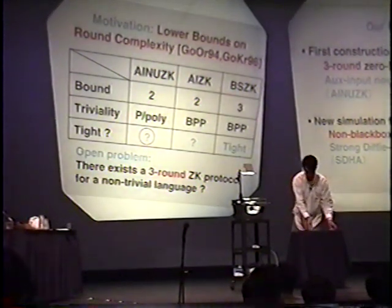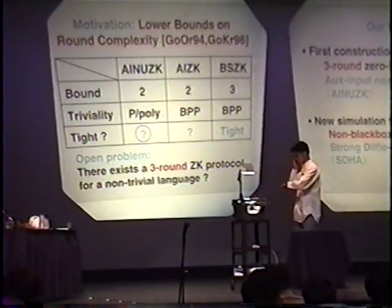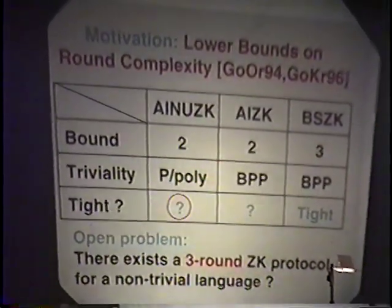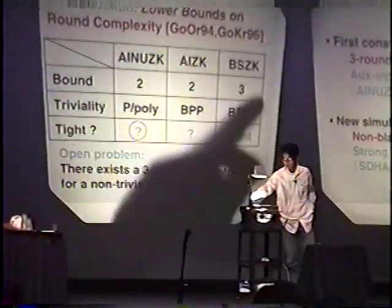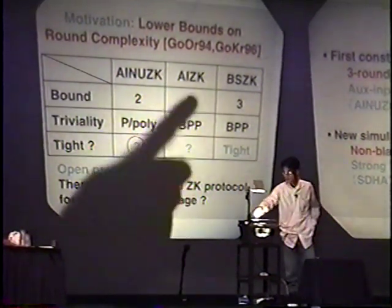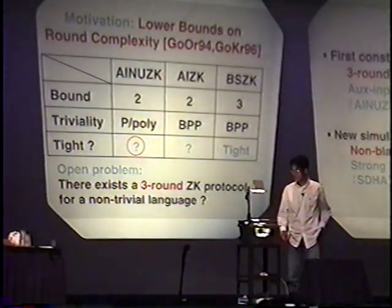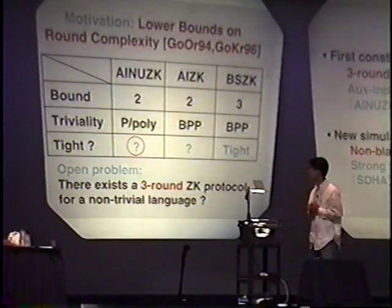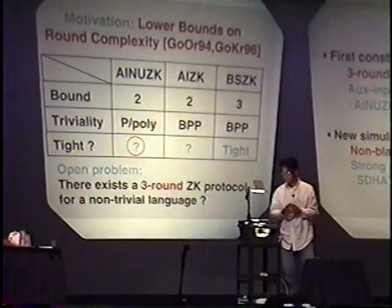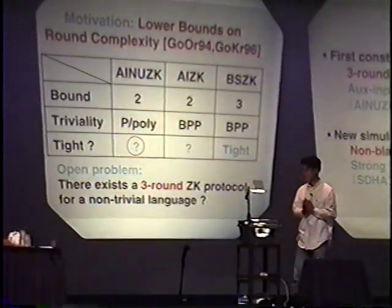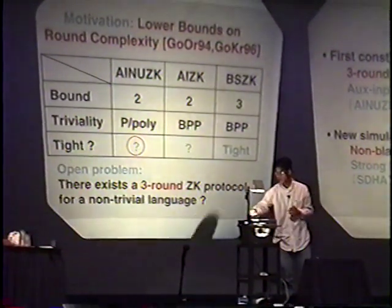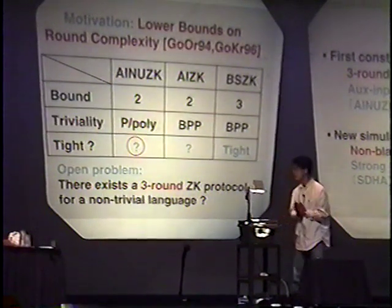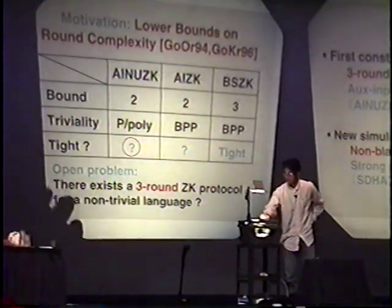Let me explain our motivation. Our motivation is to investigate the lower bounds on round complexity. And this table shows the round-complexity lower bounds regarding three definitions. For example, the lower bound regarding ESPK is three. And this is because three-round ESPK protocols exist only for BPP languages, and BPP languages have trivial zero-knowledge. So we can consider three as a lower bound. And in addition, this lower bound is actually tight, because it is well known that there exists a four-round ESPK protocol for any NP language.